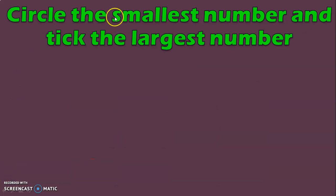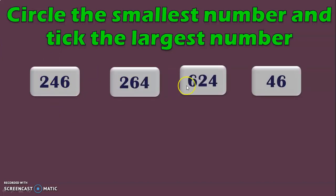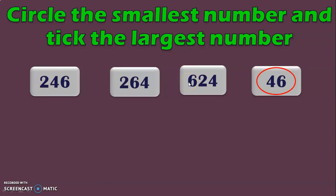Now let us do a combined activity: circle the smallest number and tick the largest number. Here we have 3 three-digit numbers and 1 two-digit number. We know that the 2-digit number is definitely smaller than a 3-digit number, so 46 is the smallest — put a circle around that. Next, identify the largest number. We have 2, 2 and 6 in the hundreds place of the three-digit numbers. We know 6 is greater than 2, so put a tick against 624, concluding it is the largest number.